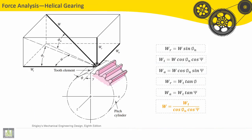Let's move now to the forces in helical gearing. So WR, the radial force, is equal to W sine phi n. This is W, and here we have the radial force, and here we have the angle phi n.